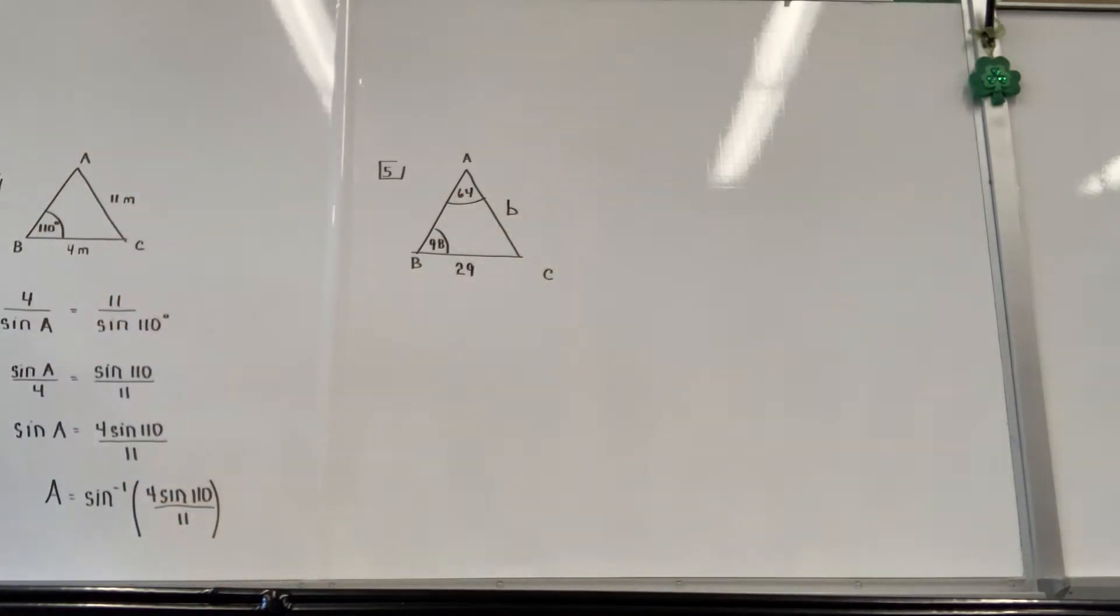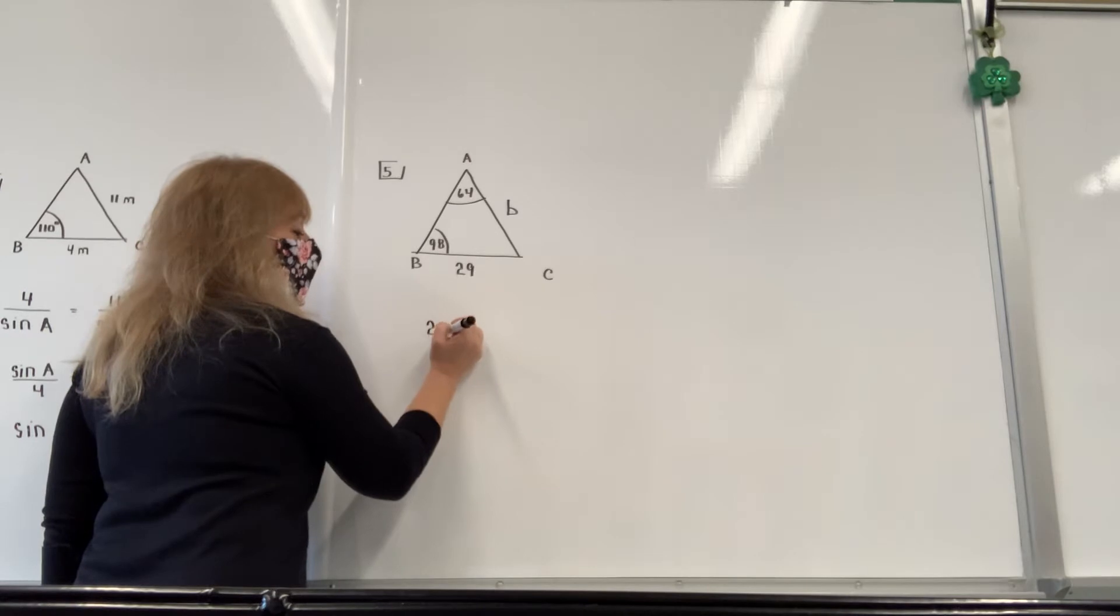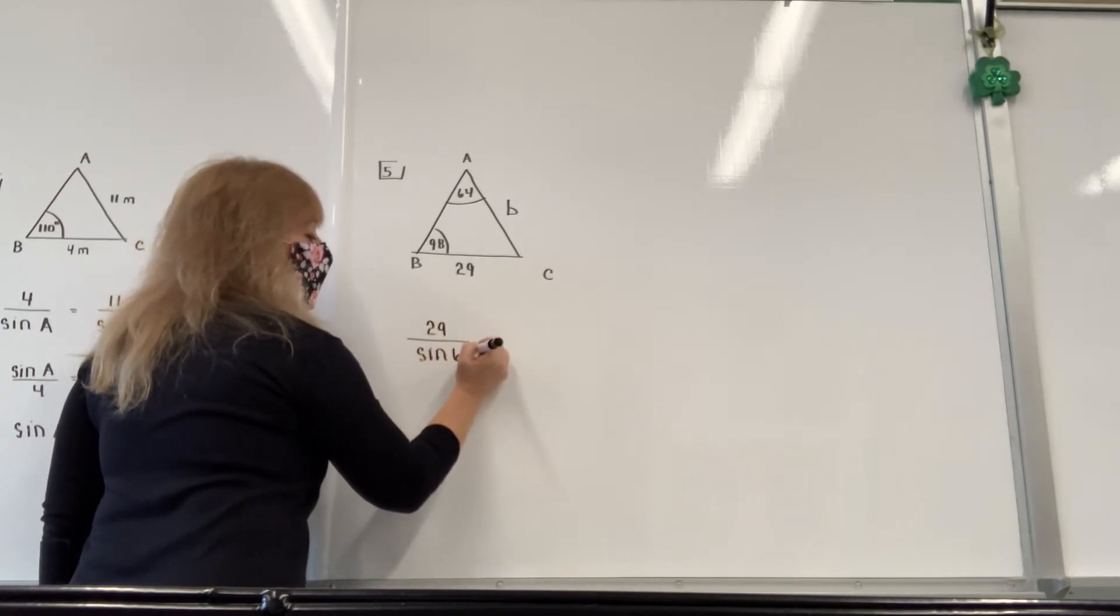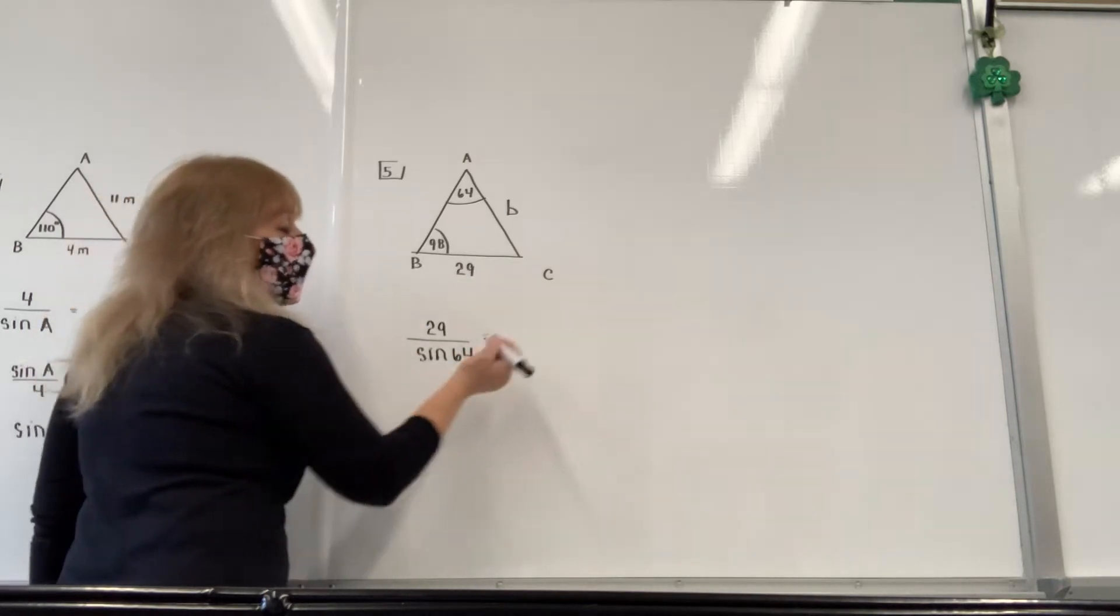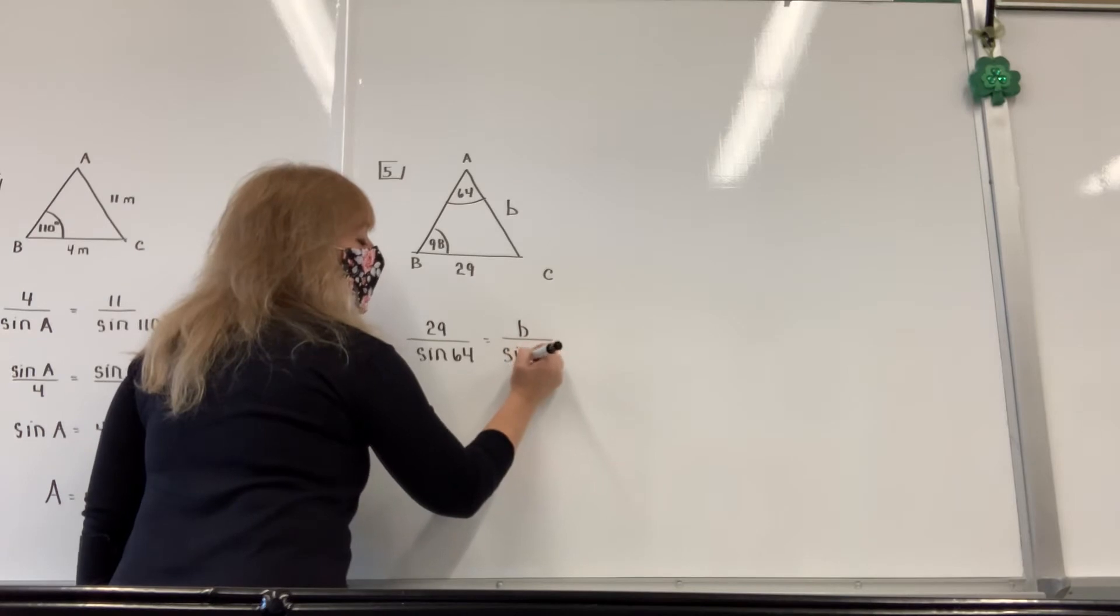And you just use the formula. And it doesn't matter where you start. I always say pick a side. So I think I'm going to pick the 29. And then divide by the sine of the opposite angle. And then it is pick a side. So this time I'll use b. And I'll divide by the sine of the opposite angle.